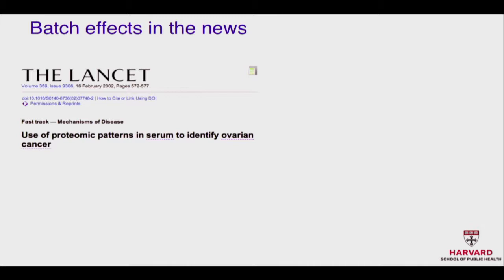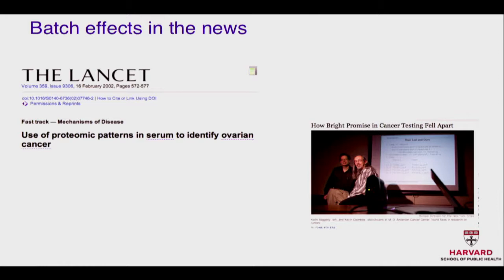This is the kind of thing that can get you in the news if you don't do it right. Perhaps the most high-profile example: there was a paper in The Lancet claiming they could tell ovarian cancer from just serum. Two statisticians — Keith Baggerly and Kevin Combs — showed that it was all a batch effect, and it was reported in The New York Times. So it's not a small detail — it can make you think you've discovered something important when you really haven't.